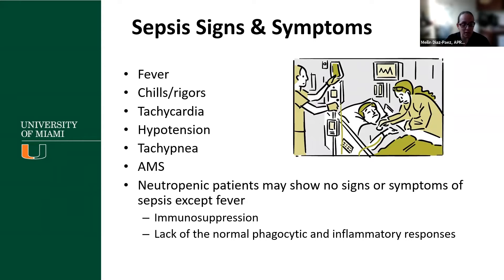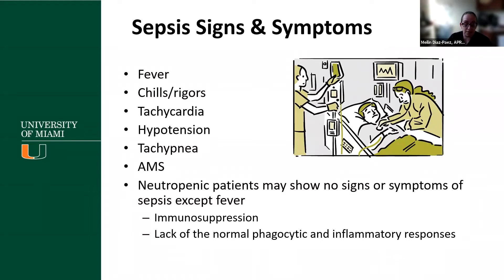Look at the trend — if you're starting to see that blood pressure drop, that's something to keep an eye out for. The respiratory rate will increase. Patients might show altered mental status, especially in our older population. Keep in mind that patients who are neutropenic may not necessarily show the classic signs and symptoms of sepsis, except usually fever. That's due to the immunosuppression from having no counts and the lack of normal phagocytic and inflammatory responses within their system.